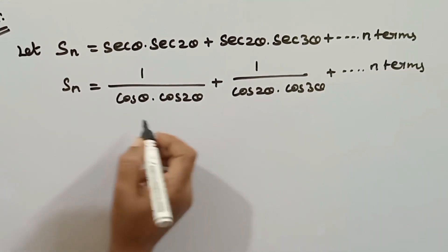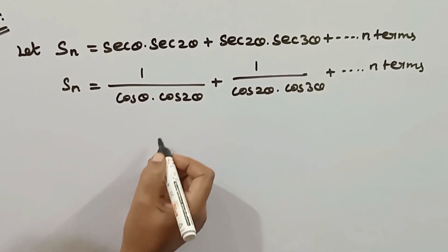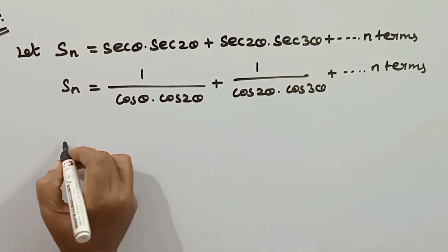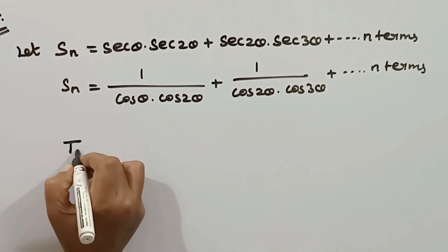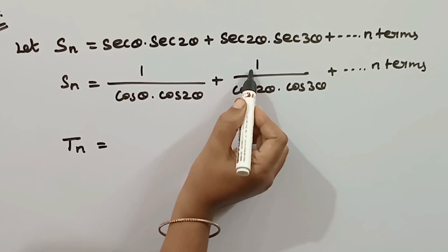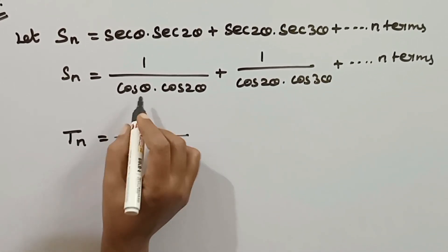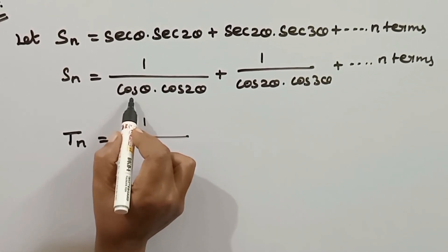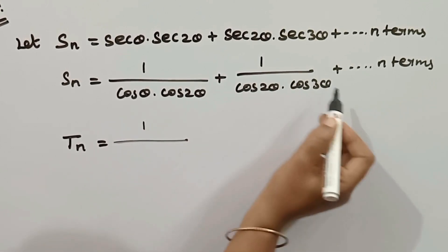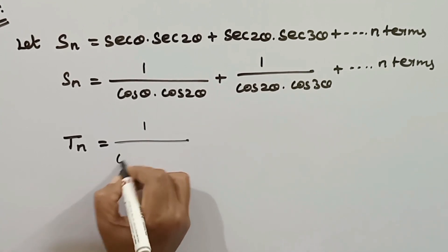Now we will note the general term of this series. We will identify that the general term involves two cosine factors: cos(nθ)·cos((n+1)θ) in the denominator. The pattern continues with cos(θ) factors in each successive term.